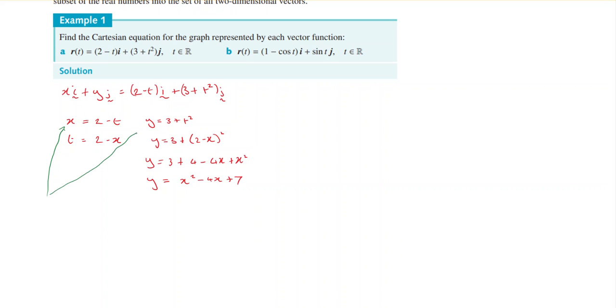So there's x, there's y. So for our domain, we are told in the question t is an element of R. So if x is equal to 2 minus t, then x is an element of R.